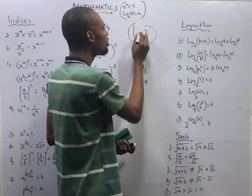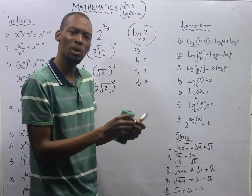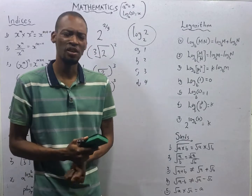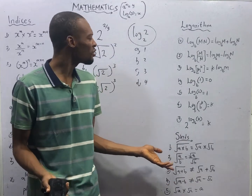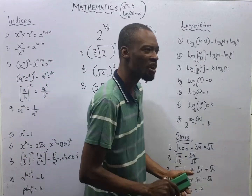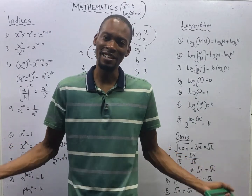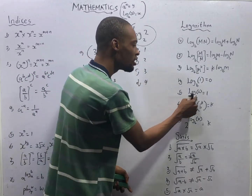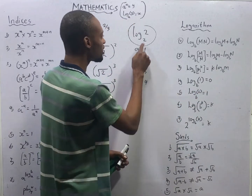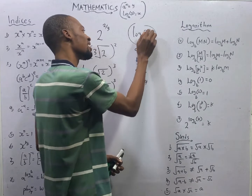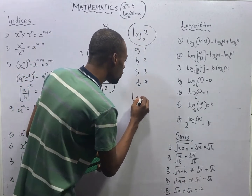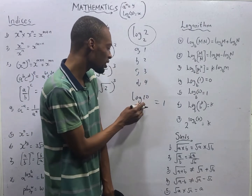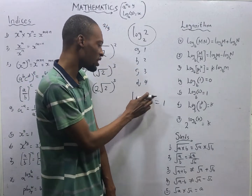After solving, you got log 2 to base 2. But looking at the options, you are seeing A, B, C, 3, D, 4. The law of logarithms says: when you have a logarithm to the same base — log B to base B — the answer is 1. So log 2 to base 2 equals 1. Also, when you don't have a base written in a logarithm, we assume it to be base 10, because that is the natural base. So log 10 equals 1.